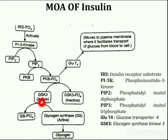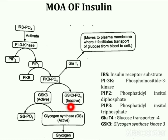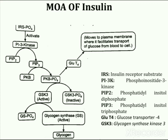Glycogen formation takes place through a series of steps in which phosphorylated protein kinase B phosphorylates glycogen synthase kinase 3 (GSK3) to phosphorylated GSK3, thereby inactivating it. Inactivated GSK3 is unable to convert glycogen synthase (GS) to inactive glycogen synthase (GSP), so it remains active and glycogen synthesis takes place uninterrupted.